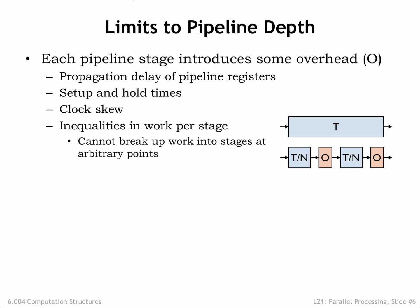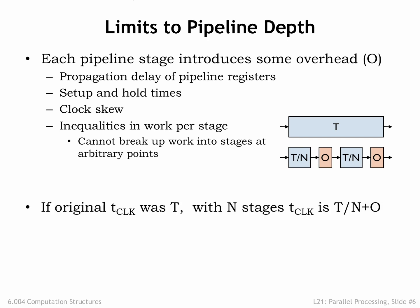Each additional pipeline stage includes some additional overhead costs to the time budget. We have to account for the propagation, setup, and hold times for the pipeline registers, and we usually have to allow a bit of extra time to account for clock skew — i.e., the difference in arrival time of the clock edge at each register. And finally, since we can't always divide the work exactly evenly between the pipeline stages, there will be some wasted time in stages that have less work. We'll capture all of these effects as an additional per-stage time overhead of O. If the original clock period was T, then with N pipeline stages, the clock period will be T divided by N plus O.